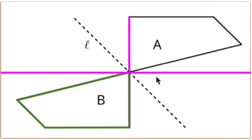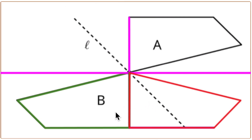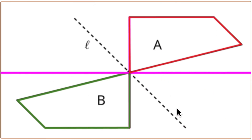If I reflect B over the vertical line of reflection — the vertical axis — it's going to go to here. Now if I reflect that image, the red image which is a reflection of B, over the horizontal axis, it's going to end up covering A. So A can be the result of two reflections, just not a single reflection. It is the result of a rotation — a 180-degree rotation.